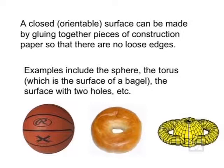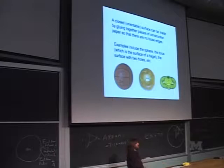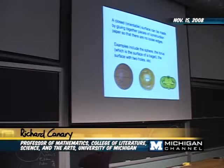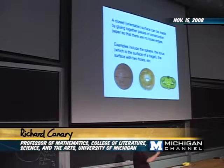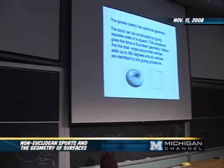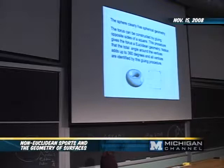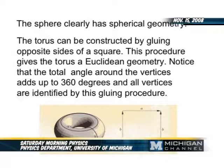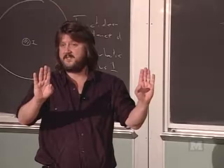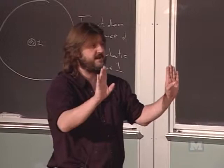Now let's talk about surfaces — the geometry of surfaces. Surfaces are things which look locally like two-dimensional space, or you can think about making them with construction paper and gluing. You can glue up and make a ball, a doughnut, a doughnut with two holes, three holes, et cetera. The sphere has spherical geometry. The torus — the doughnut with one hole — actually has Euclidean geometry. You can make it by taking a sheet of Euclidean paper and gluing the top to the bottom and the left to the right.